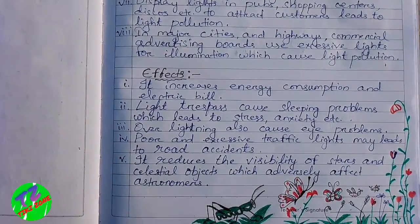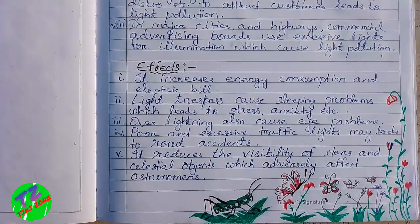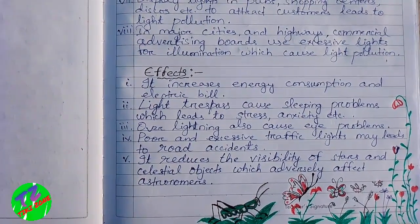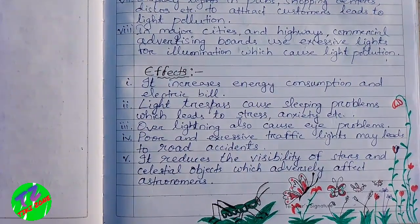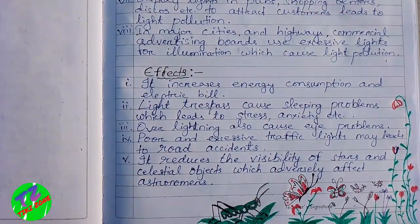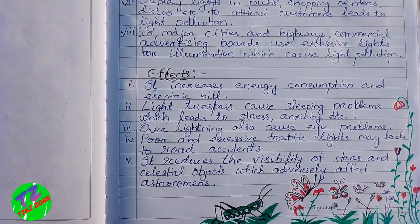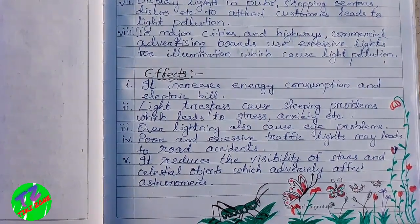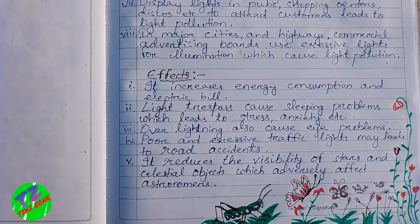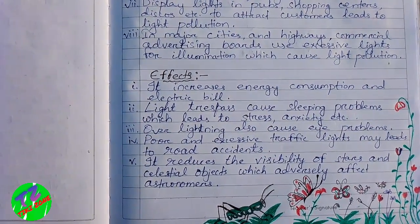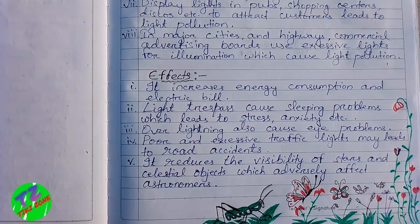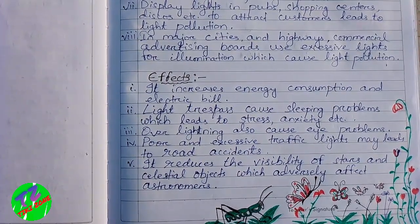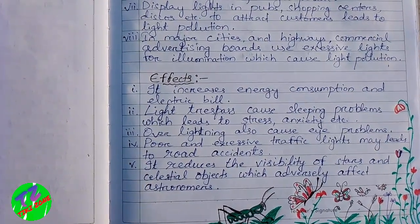Now let us discuss the effects of light pollution. Light pollution increases energy consumption and electric bills. Light trespass causes sleeping problems, which lead to stress, anxiety, etc. Over-lighting also causes eye problems, and poor or excessive traffic lights may lead to road accidents.